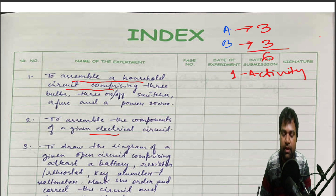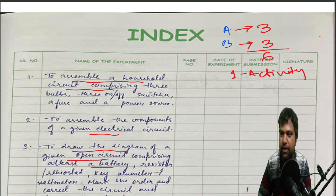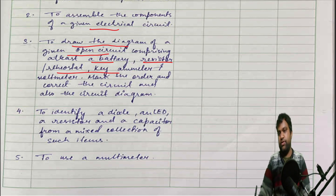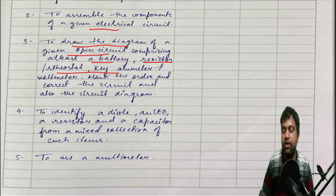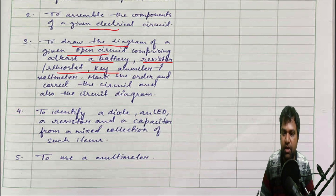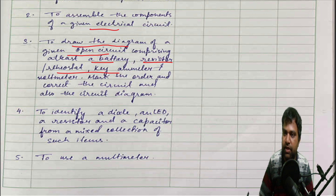In the exam you have to perform one activity and the external examiner may ask some questions, so don't choose activities carelessly. We have chosen some easy activities, like drawing the circuit diagram of a given open circuit comprising at least a battery, a resistor, and a key. It's easy — just an open circuit and closed circuit — that's why we chose this. You can also write from your lab manual.